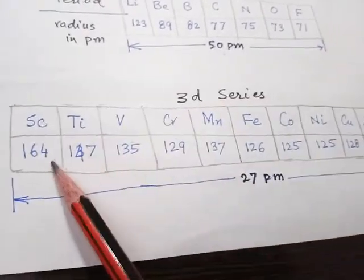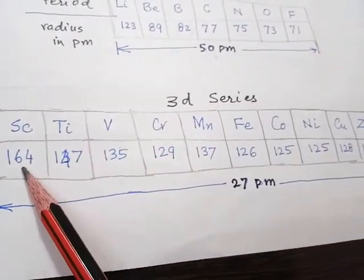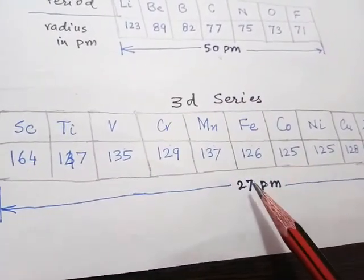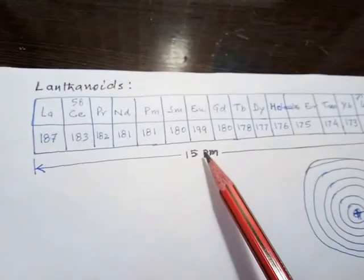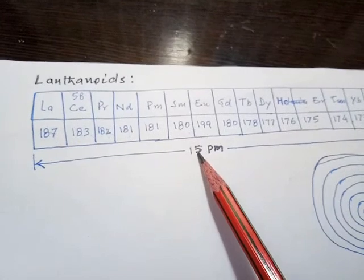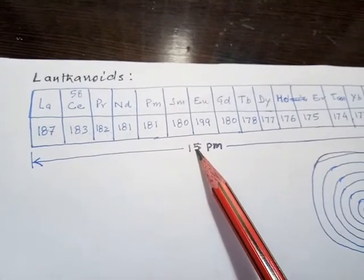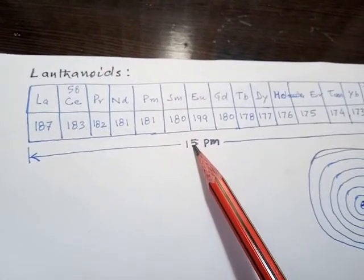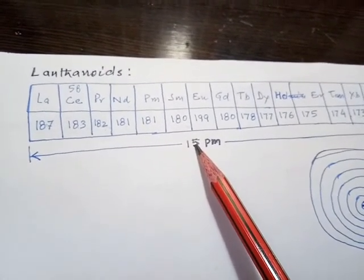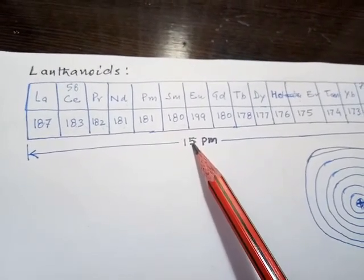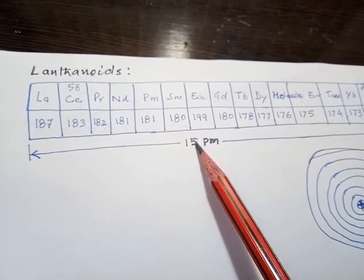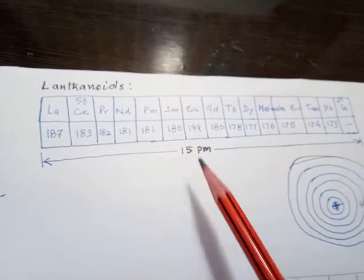In the 3d series, between these 10 elements there is a decrease of 27 picometers. In that respect, the decrease of 15 picometers between these 14 lanthanoid elements is not that large, but it is very important to explain several things.